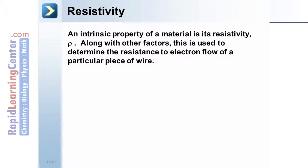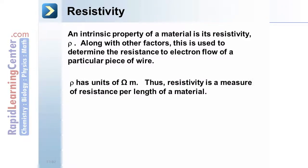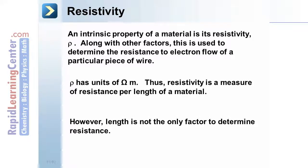Resistivity. An intrinsic property of a material is its resistivity, rho. Along with other factors, this is used to determine the resistance to electron flow of a particular piece of wire. Resistivity has units of ohm meters. Thus, resistivity is a measure of resistance per length of a material. However, length is not the only factor to determine resistance of a wire or a resistor.